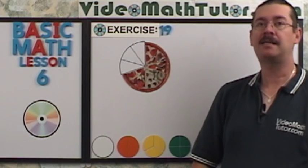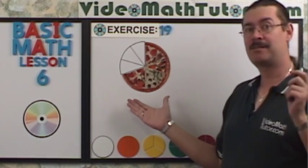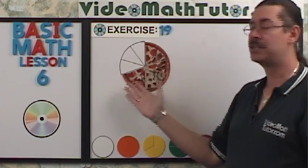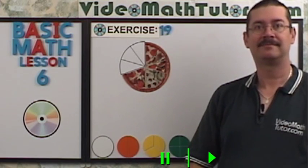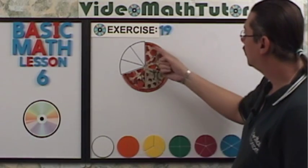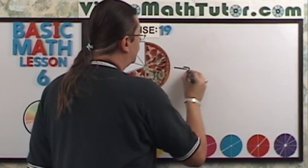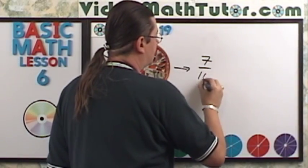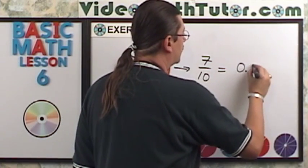For exercise 19, I'd like you to write the decimal fraction and the decimal form for this representation of the pizza slices. Not the blank spots, but the pizza. How many slices do we have? One, two, three, four, five, six, seven. So this becomes 7 tenths. The decimal form of this would be 0.7.